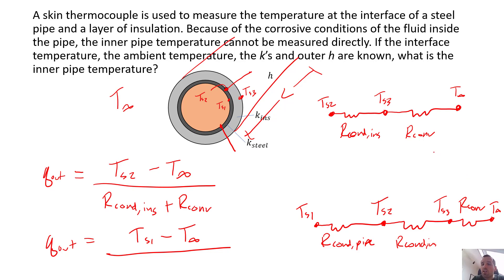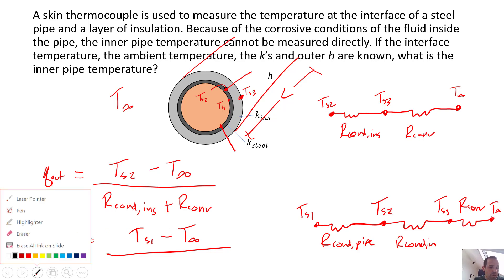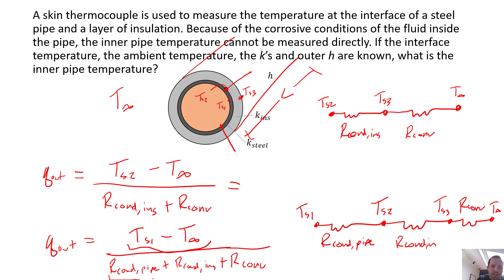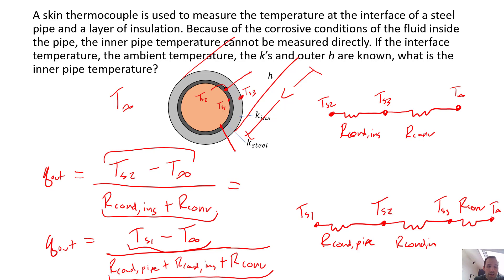However, we can equate the two expressions because they are both calculating the total heat flow out of our system. This lets us set up an equation where we can solve for the unknown temperature. The total thermal resistance in the denominator is R_cond_pipe plus R_cond_insulation plus R_conv. Note that the larger temperature difference is balanced by the larger thermal resistance, and the smaller temperature difference is balanced by the smaller thermal resistance, but the ratio ΔT / R_total is still equal to Q_out. We have one equation and one unknown — we can solve for TS1.